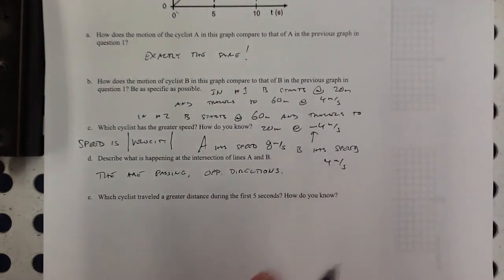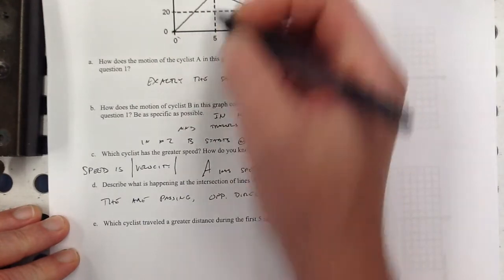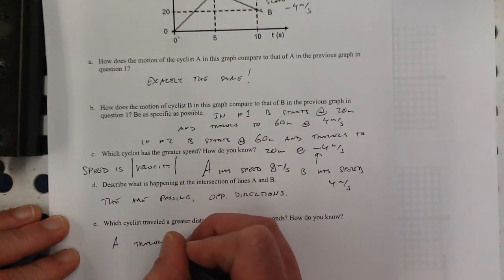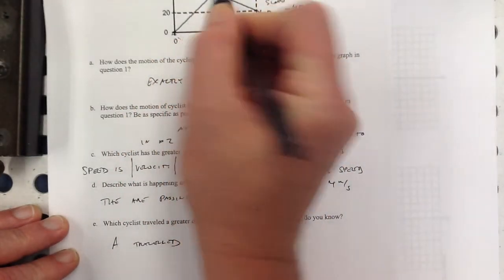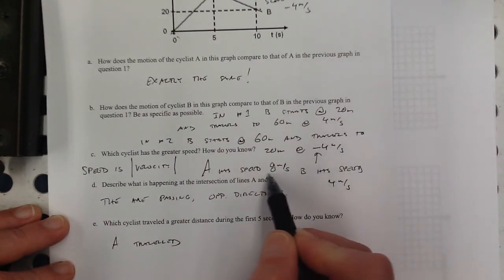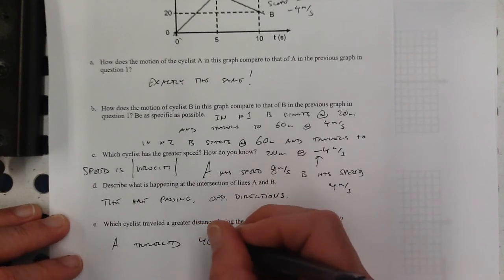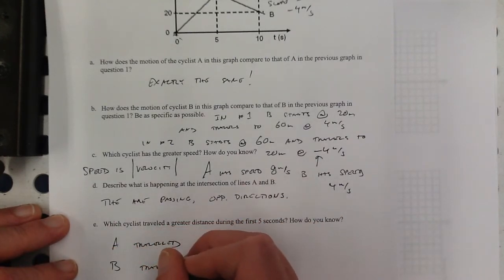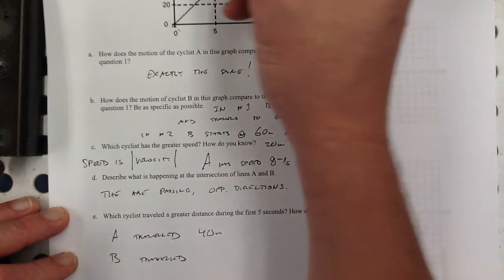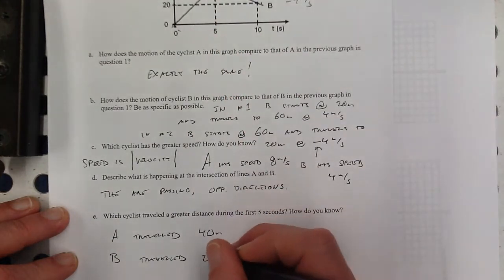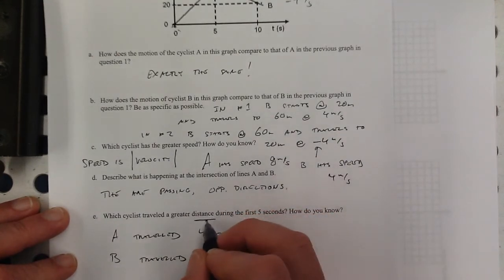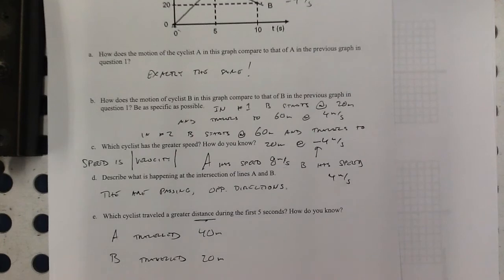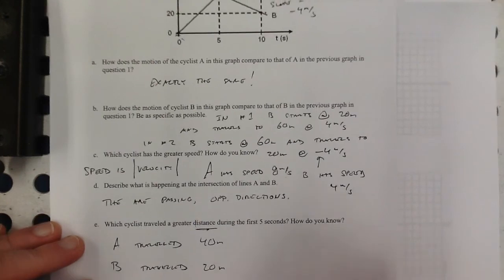Which cyclist traveled a greater distance during the first 5 seconds? A traveled, just look at the graph. A went from 0 to 40, which makes sense if you're going 8 meters per second and do that for 5 seconds, maybe 40 meters. And B traveled, in the first 5 seconds, B goes 20 meters. And distance is kind of like speed. Distance is always positive. If you were to ask me, what's the distance from the school to your house? Let's say it's about 15 miles. And if then you said, what's the distance from your house to the school? I wouldn't say negative 15. I'd still say it's 15 miles. So distance is always positive, like speed. So A.